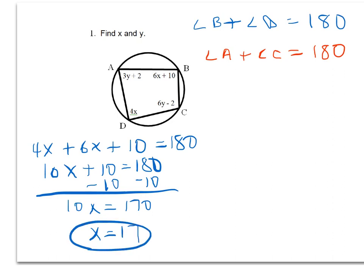Now we'll do a separate equation with angle A and angle C, setting them equal to 180 degrees. And combining like terms, the 2's cancel out. We get 9y equals 180, and y equals 20.